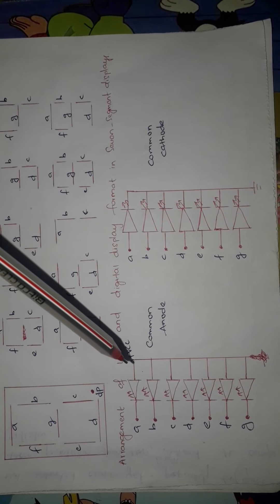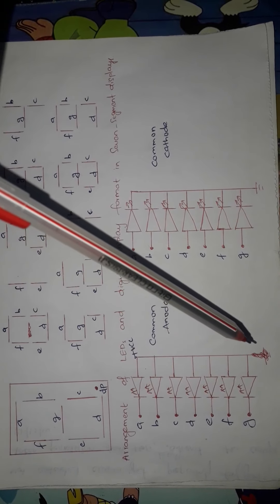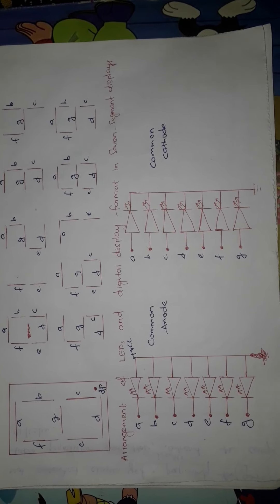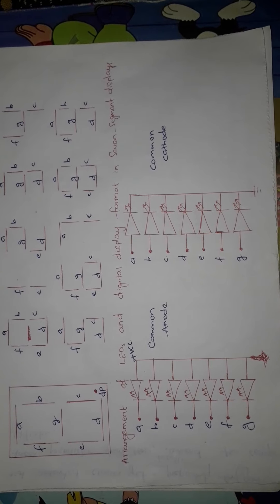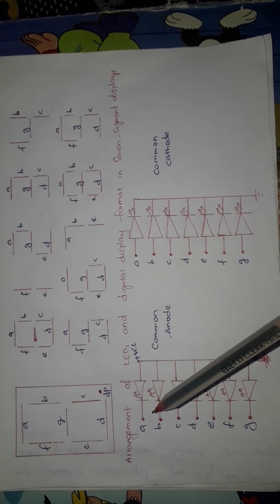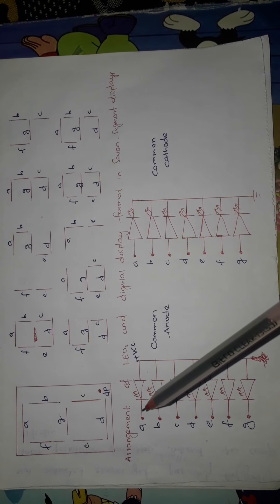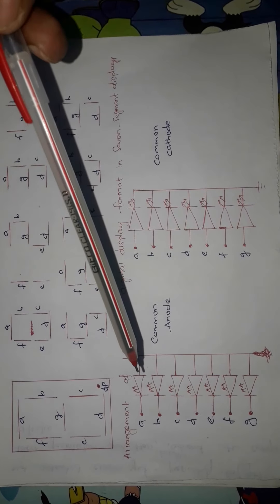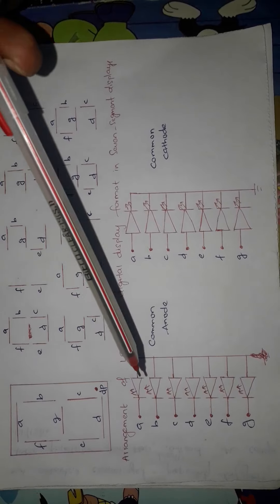In common anode configuration, you connect all the anode terminals of the LEDs to the positive VCC, which is logic one. The anode terminals are commonly connected to VCC, and at the other end — the cathode — you apply the value to control each segment labeled A, B, C, D, E, F, G. To turn on an LED, since one end is connected to VCC, you need to apply logic zero at the other end.